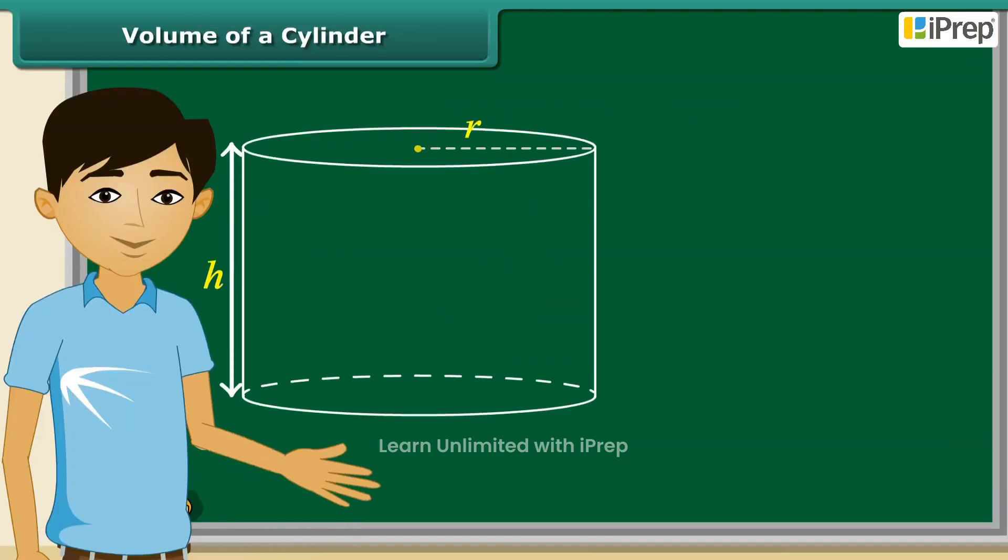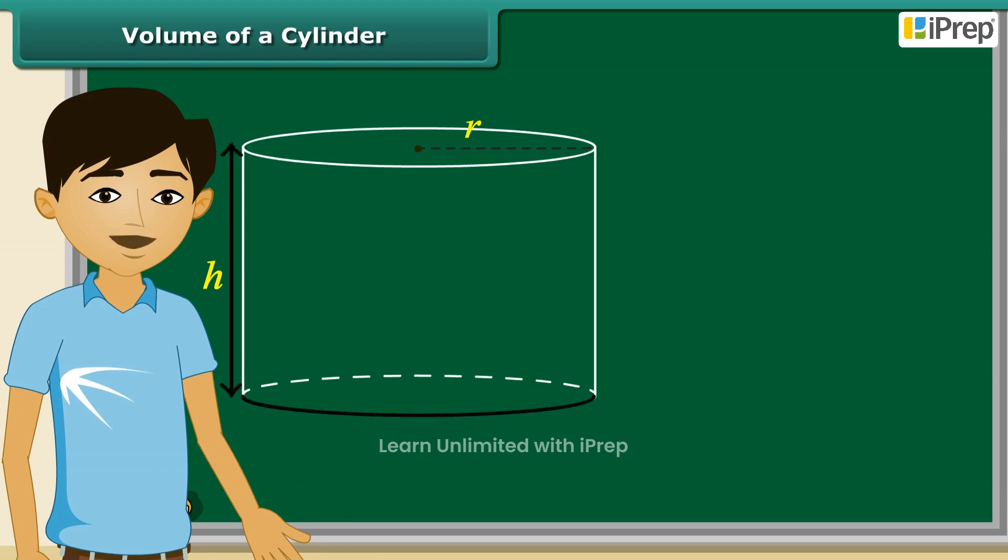Now, students, we will calculate the volume of this cylinder, which is very easy to calculate. This cylinder has radius R and height H.